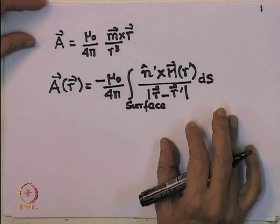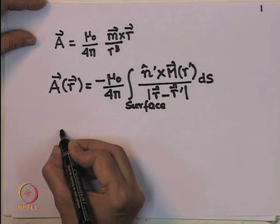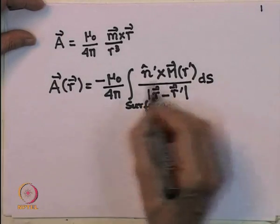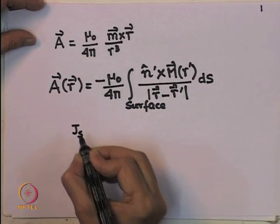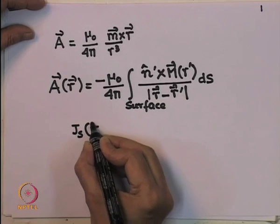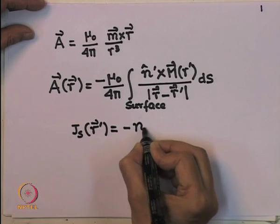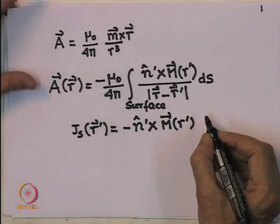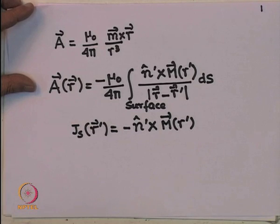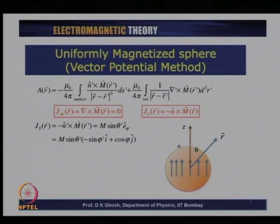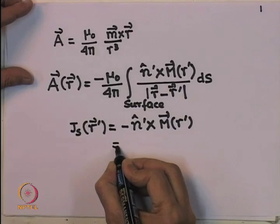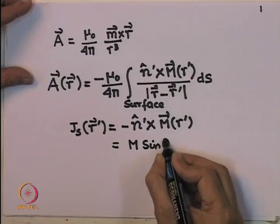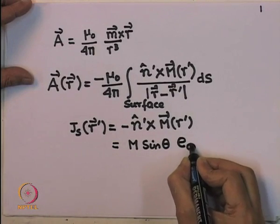This is the quantity we wish to calculate. The equivalent surface current due to magnetization is J_s(R') = −N' × M(R'). Taking the direction of magnetization as the z-axis, the angle between the magnetization direction and the radial vector is θ. This quantity is M sinθ, and its direction is the azimuthal direction ê_φ, which is perpendicular to both the radial direction and the z direction.